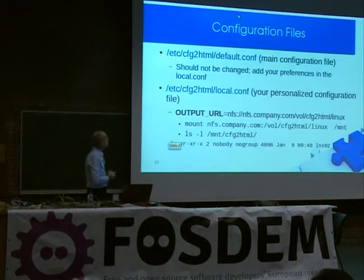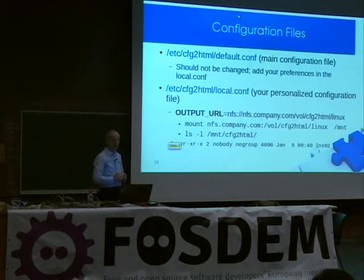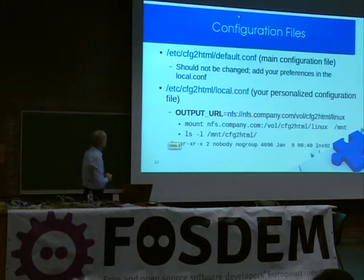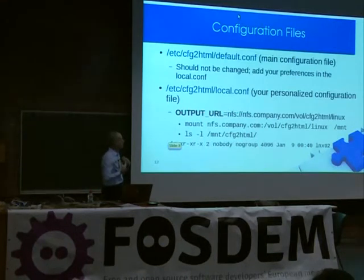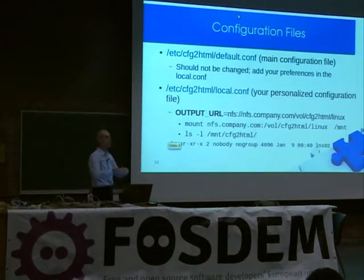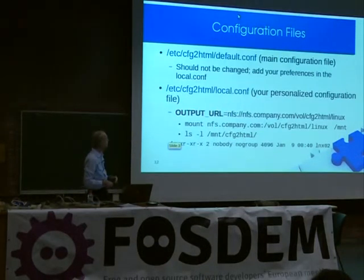I already mentioned the configuration files — the main configuration file, default.conf, is in the /etc/config-to-html directory. You shouldn't change anything there; you can look at it, and if you want to modify something, copy it into the local configuration file. The main use of the local.conf for me personally on the customer side is the output_URL variable, which lets you mount an NFS share and collect everything on one central point. That piece of code actually comes from Relax and Recover, one of my other projects.